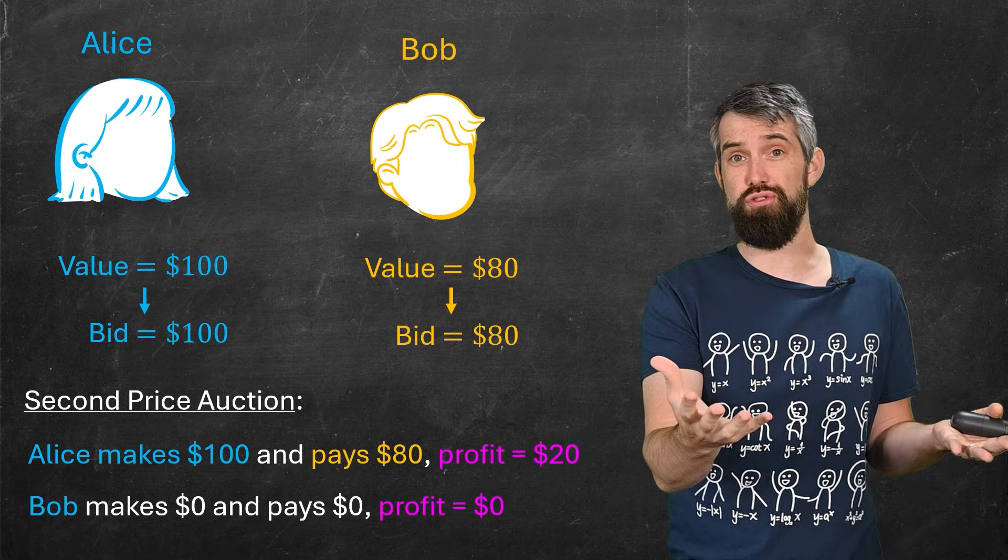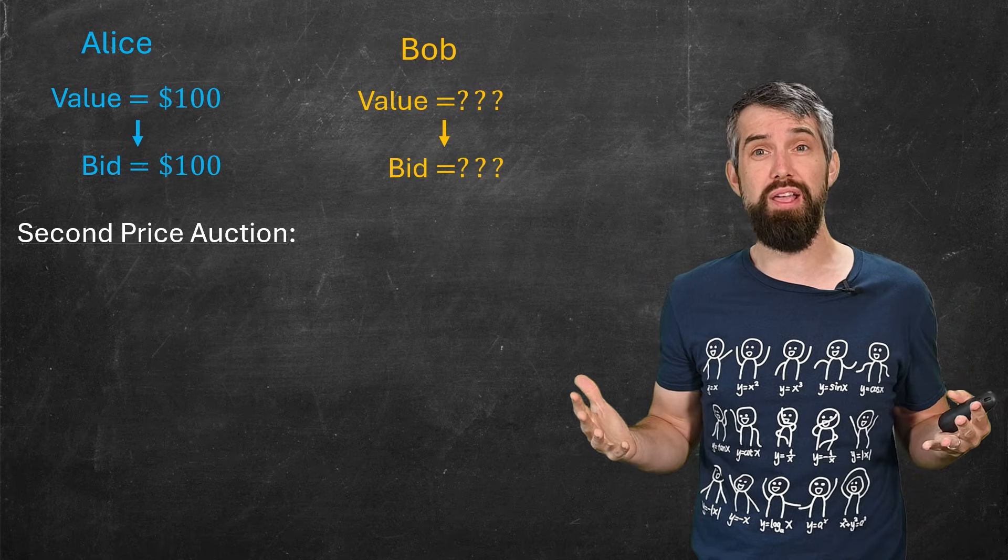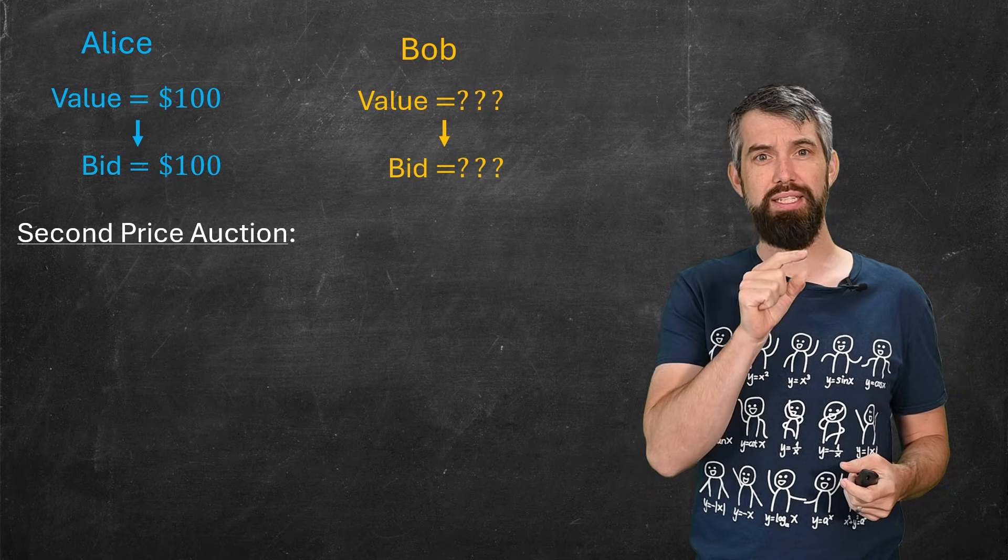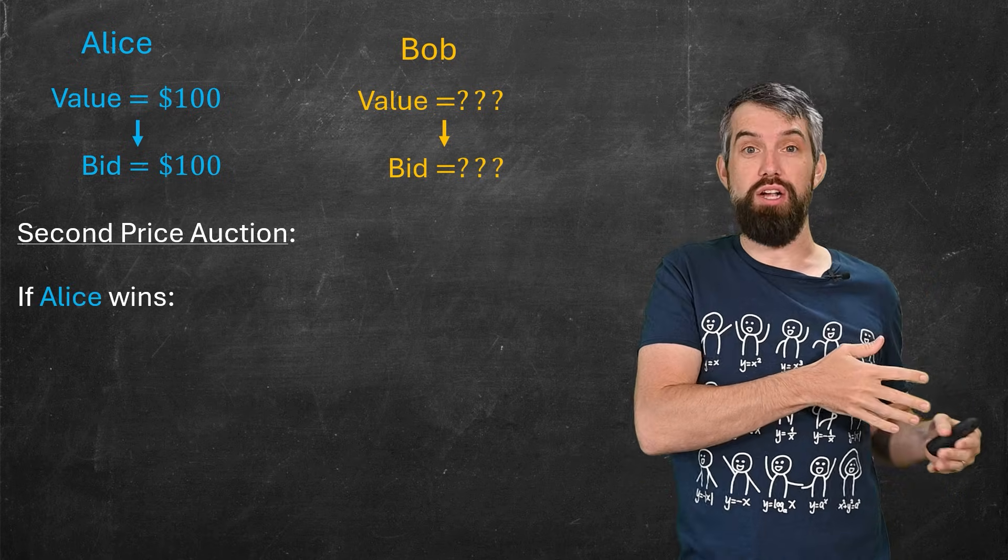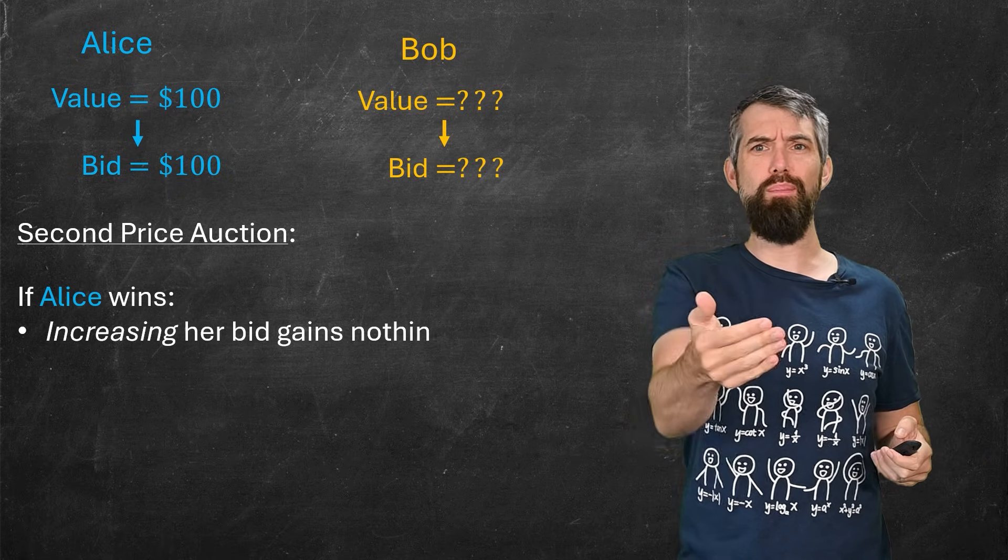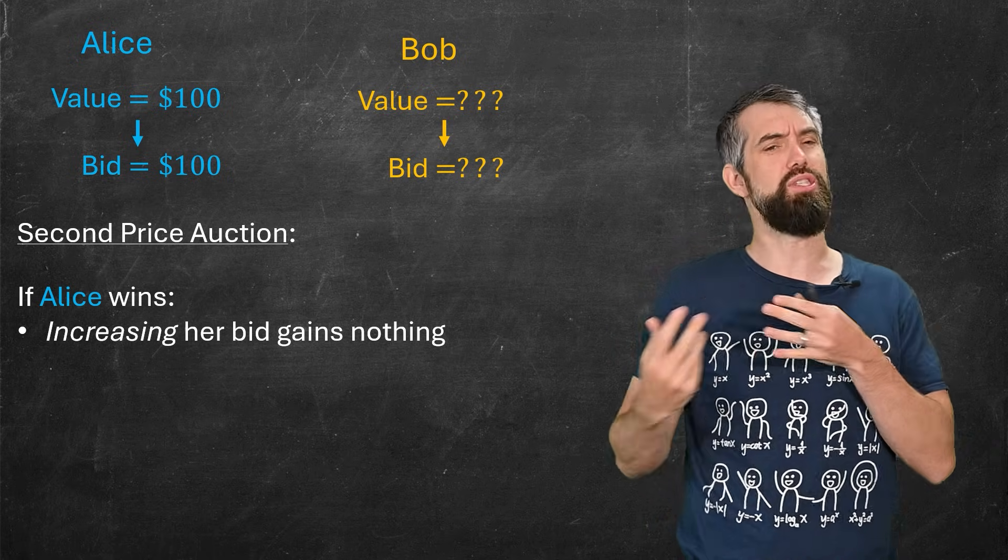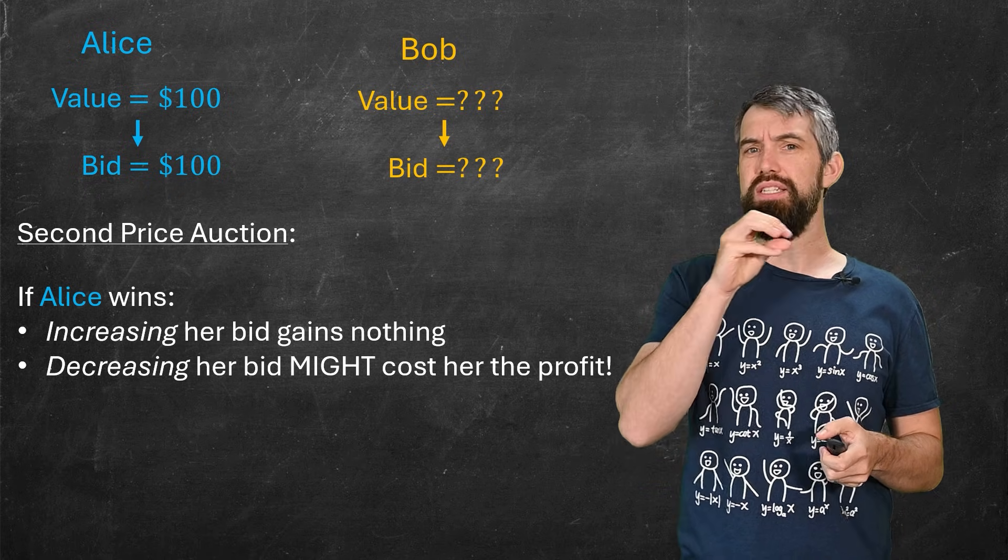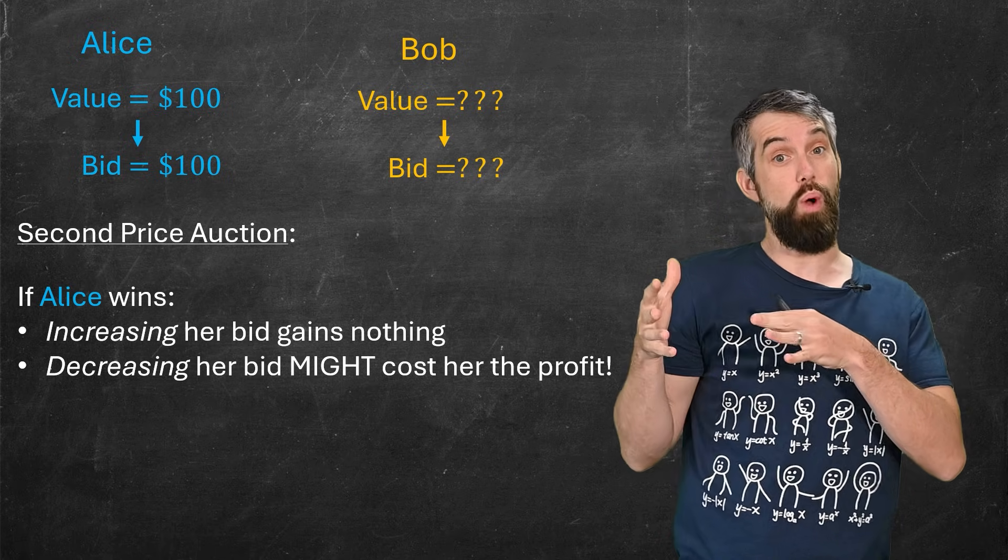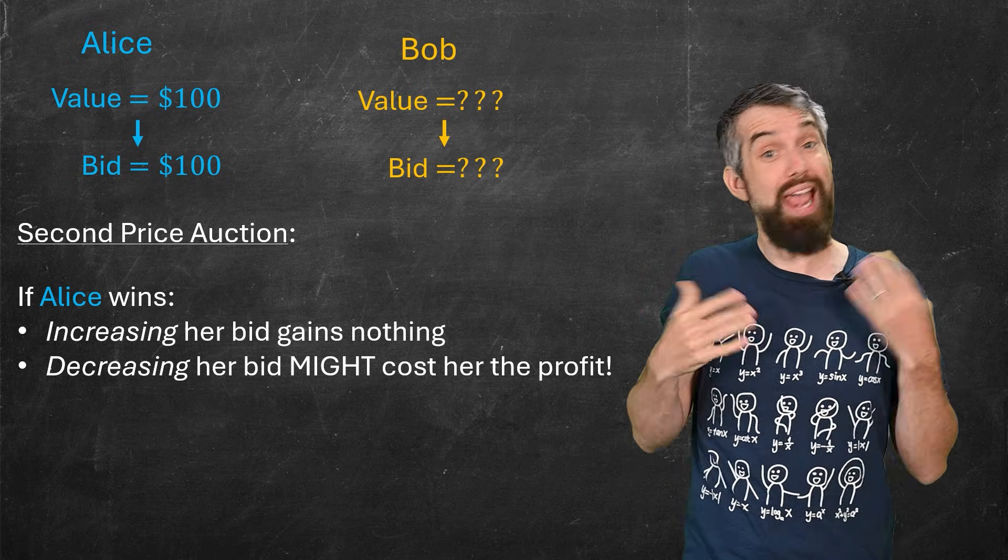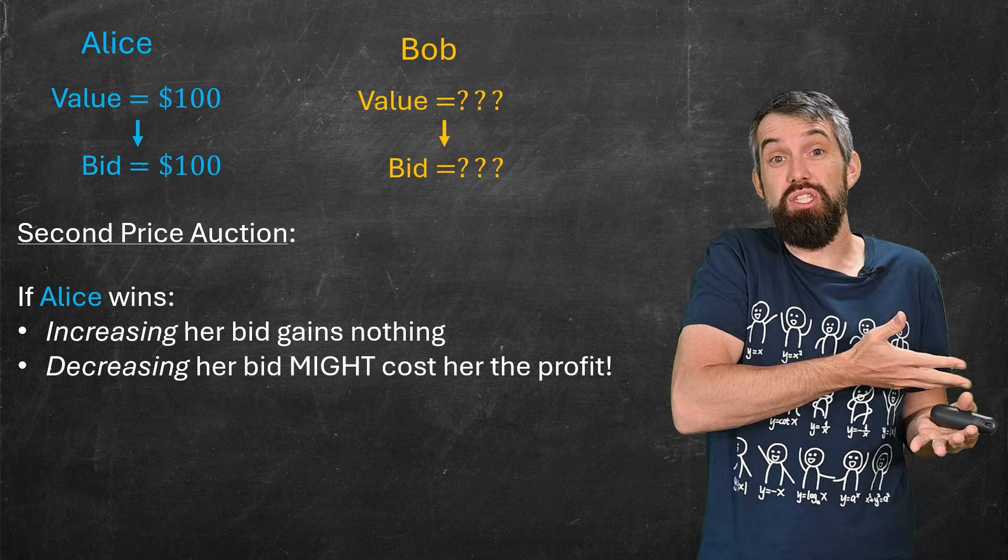But maybe they shouldn't tell the truth. Maybe they should bid less. Let's imagine that Alice has no idea what Bob's going to do, doesn't know what Bob's valuation is, doesn't know what Bob's bid is. In this case, telling the truth is the optimal strategy for her. If Alice wins the auction, then spending more money, bidding more money isn't going to gain her anything. She already won and her price that she pays doesn't depend on her, it depends on Bob. But similarly, if she decreases her bid, that can only be bad for her. It's not going to save her any money. The amount that she pays is what Bob does. But if she lowers her bid, she now might lose and lose that opportunity for profit.